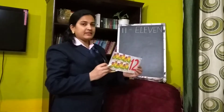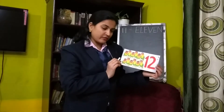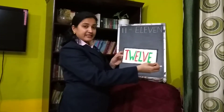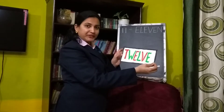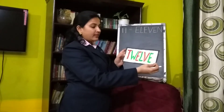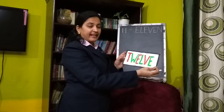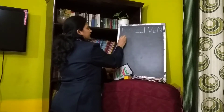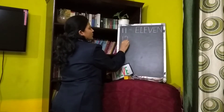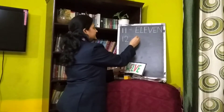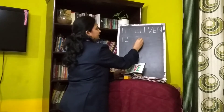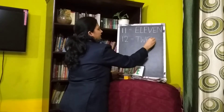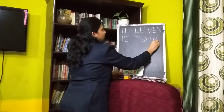Next number is 1-2, 12. 12 beautiful parrots. And its spelling is T-W-E-L-V-E. Help me in writing 12. Tell me its name — 12, T-W-E-L-V-E.